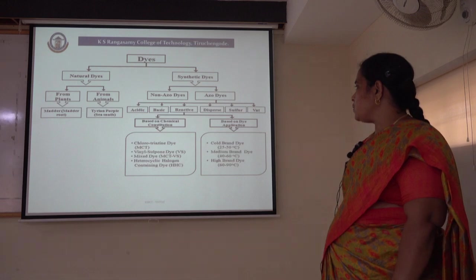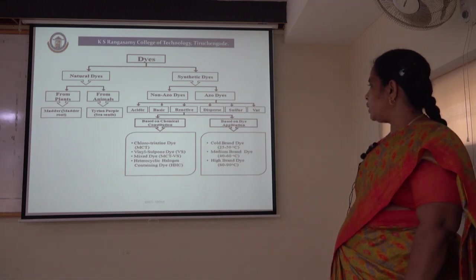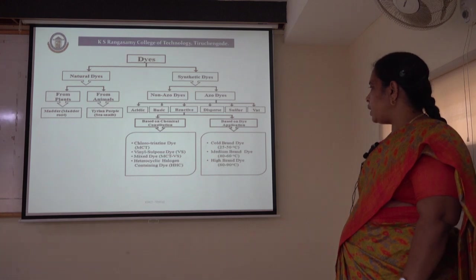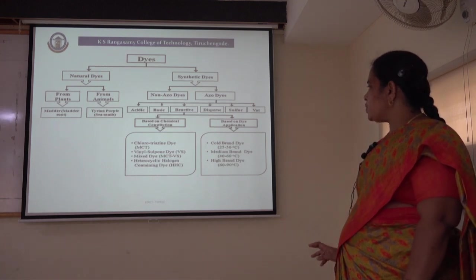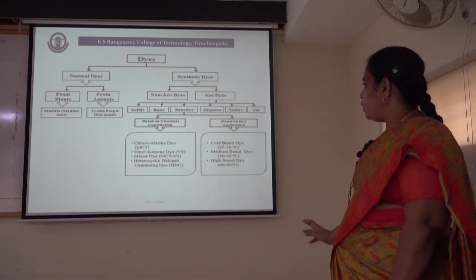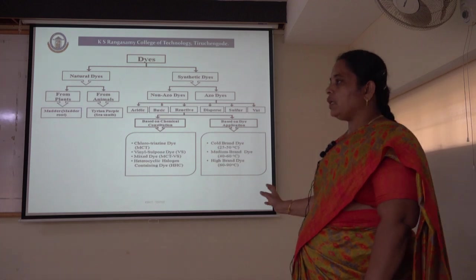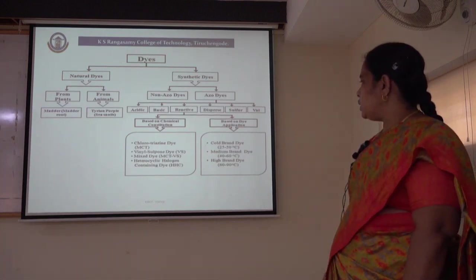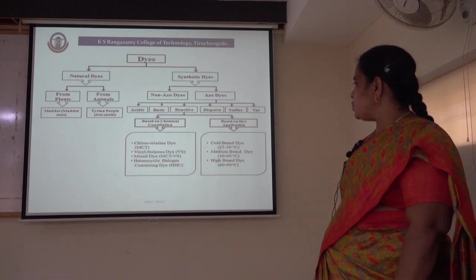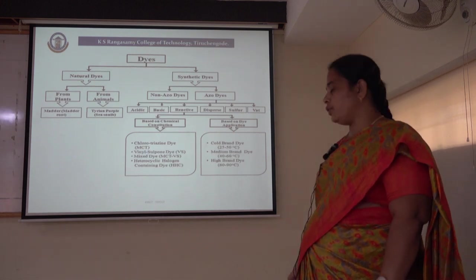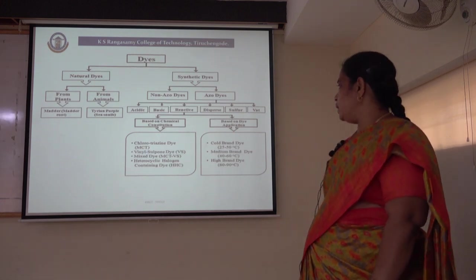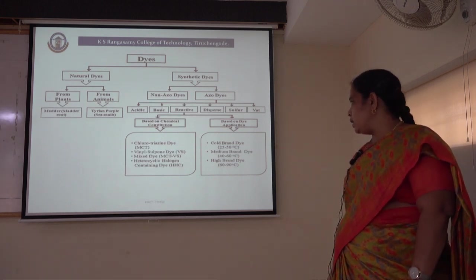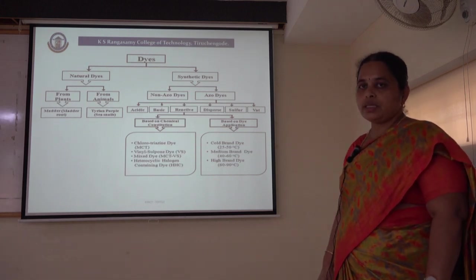Coming to the classification of reactive dyes based on their application process, they can be classified into three types: cold brand dyes, which are applied at a temperature around 25 to 50 degrees Celsius, that is in the room temperature range; medium brand dyes, applied around 40 to 60 degrees Celsius — that is your vinyl sulphone dyes; and hot brand dyes, which are applied to the cellulosic material at 60 to 90 degrees Celsius.